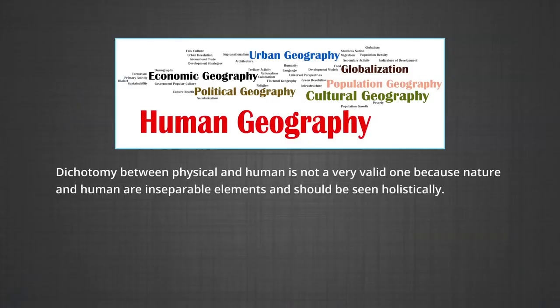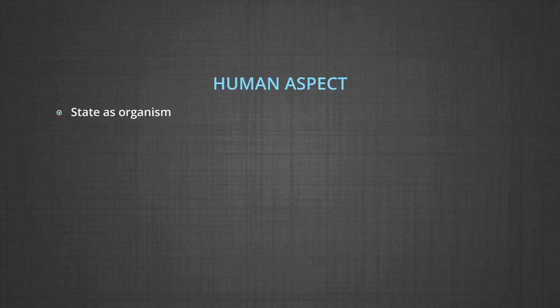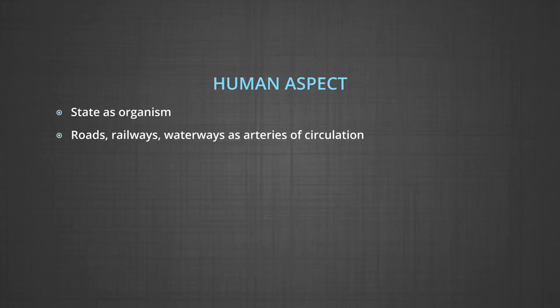Finally, we will appreciate that the dichotomy between physical and human is not a very valid one, because nature and human are inseparable elements and should be seen holistically. It is interesting to note that both physical and human phenomena are described in metaphors using symbols from the human anatomy. We often talk of the face of the earth, eye of the storm, mouth of the river, snout of the glacier, neck of the isthmus, and profile of the soil. Similarly, regions, villages, and towns have been described as organisms. German geographers described the state or country as a living organism. Networks of roads, railways, and waterways have often been described as arteries of circulation.